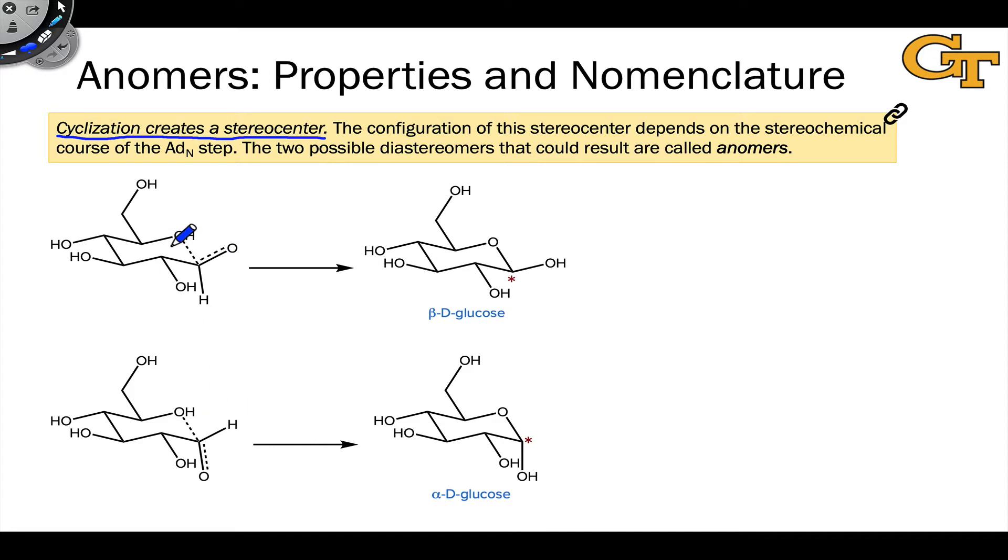The faces of the carbonyl group in an open-chain monosaccharide are diastereotopic because of all the other stereocenters in the structure. As a result, addition of the hydroxyl group to one face or the other gives rise to diastereomers.